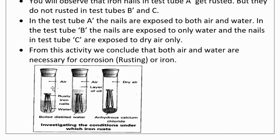In test tube A, the nails are exposed to both air and water. In test tube B, the nails are exposed to only water and in test tube C, dry air only. From this activity we conclude that both air and water are necessary for corrosion.